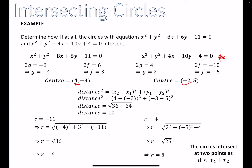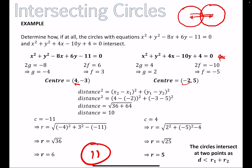Now we compare the sum or difference of the radii to the distance between the centers. The sum of the radii is 6 + 5 = 11, and the distance between the centers is 10. Because the distance between the centers is less than the sum of the radii, the circles intersect at two points — they overlap.